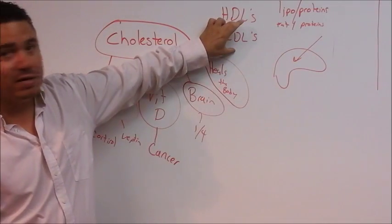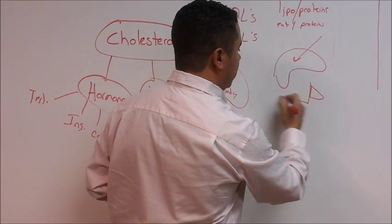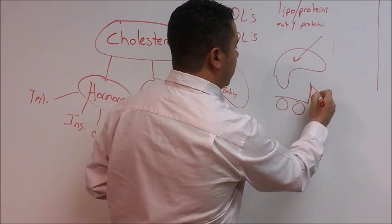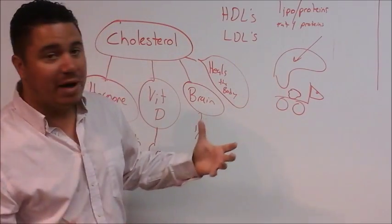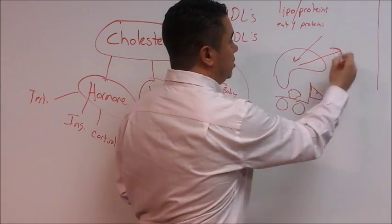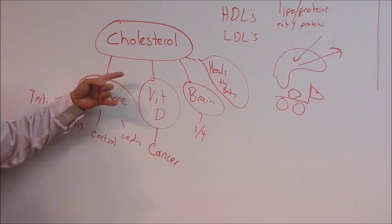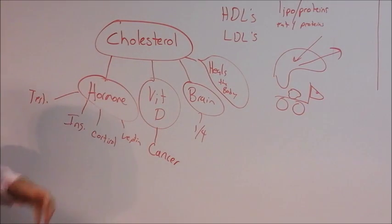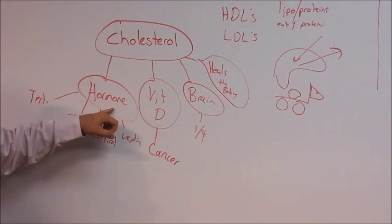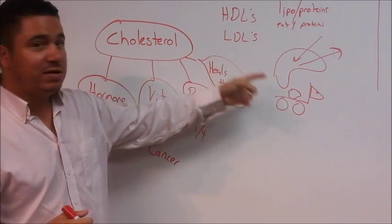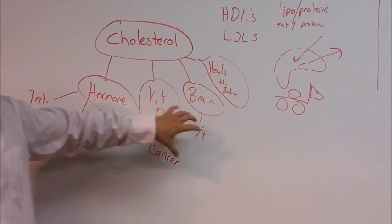And then you have these LDLs which are again like little trucks. Okay that's my truck there. And it's going to carry cholesterol to parts of the body from the liver to parts of the body that need healing. So if you need to make more hormones, guess what's going to happen? Your LDLs are going to go up because you're going to need more cholesterol going out to the body to make hormones. If you need more vitamin D, your body's going to create more LDLs to do that. If your brain needs more cholesterol, you need LDLs for that.